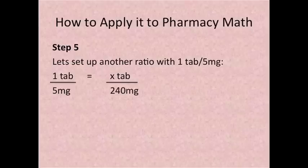Step 5. Let's set up another ratio with one tablet per 5 milligrams being one of the ratios. So one tablet has 5 milligrams. So one tablet over 5 milligrams is equal to x amount of tablets over 240 milligrams. So we want to know how many tablets you can find in 240 milligrams.